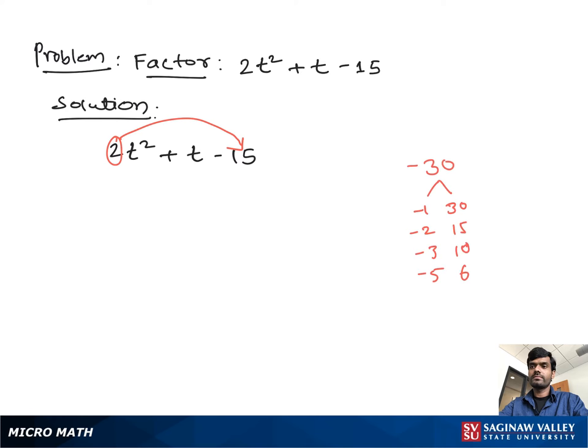Then we get -30 and we have factors of -30. Now we find out the pair of numbers which multiply to give us -30 and add to give us positive 1. So we have -5 and 6. You can write 2t² - 5t + 6t - 15.